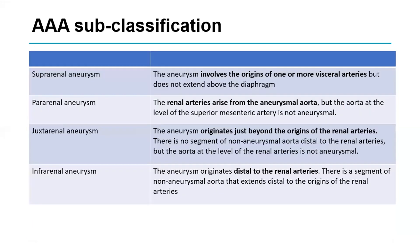We can classify abdominal aortic aneurysms in relation to the renal arteries. Suprarenal involves one or more visceral arteries but does not extend beyond the diaphragm. Pararenal means the renal arteries arise from the aneurysmal aorta itself. Juxtarenal originates just beyond the renal artery origins with no segment of non-aneurysmal aorta distal to the renals. Infrarenal — the most common and preferred by vascular surgeons — originates distal to the renal arteries, with a non-aneurysmal neck we can stitch to or land a stent.